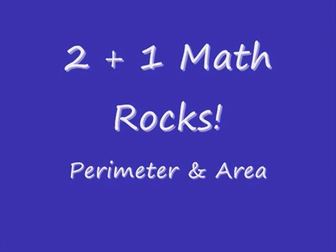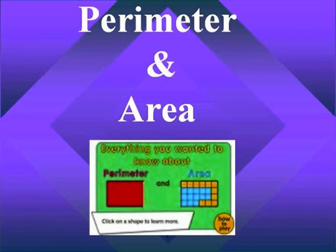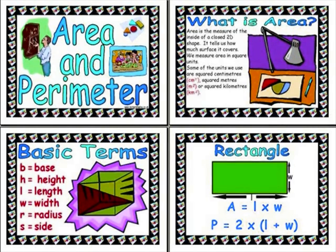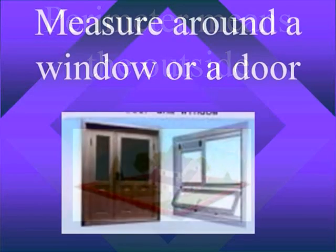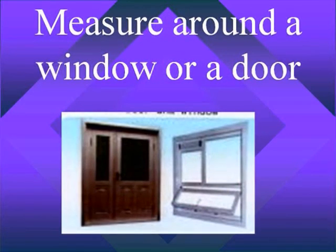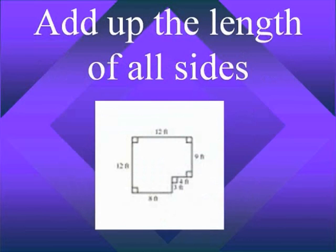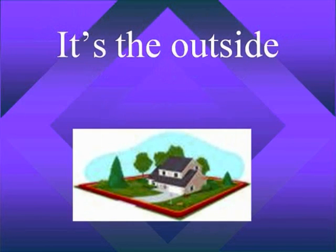Perimeter means the outside. Measure around a window or a door. Add up the length of all sides — it's the outside.